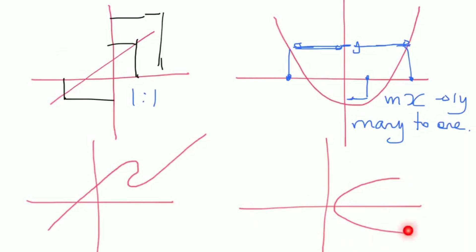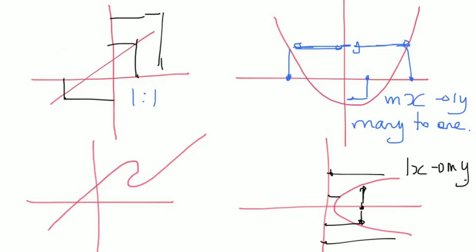Looking at the bottom-right graph, a single x value corresponds to multiple y values. So one x value is generating multiple y values. However, each y value will only ever be generated from a single x value. So this is a one-to-many graph.